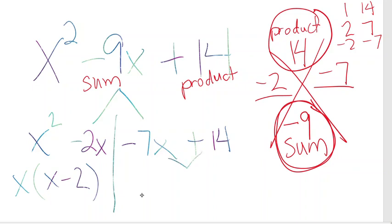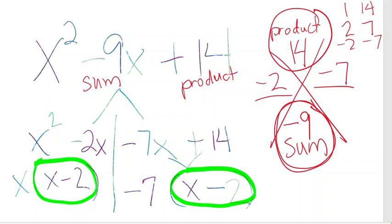Group the second two terms. They have a greatest common factor, negative 7x, positive 14. They're both divisible by negative 7, and we're left with x minus 2. Now, whatever you got in this parentheses, you have to be sure you get the same thing in that parentheses, which is why I factored out a negative 7, because when you divide this positive 14 by negative 7, that's how I'm going to get back to that negative 2.